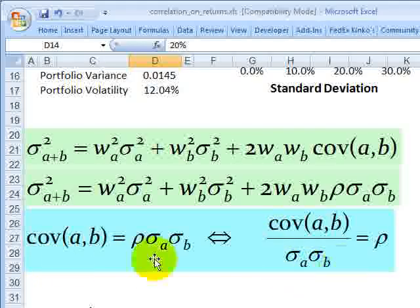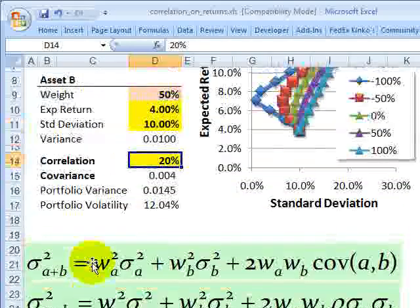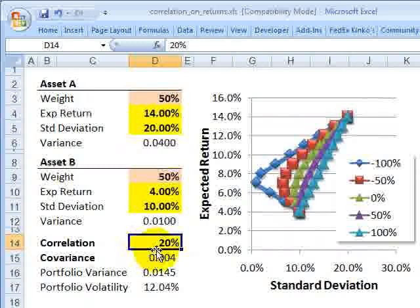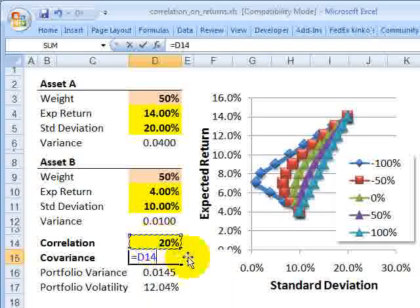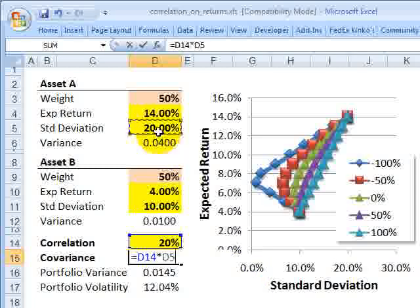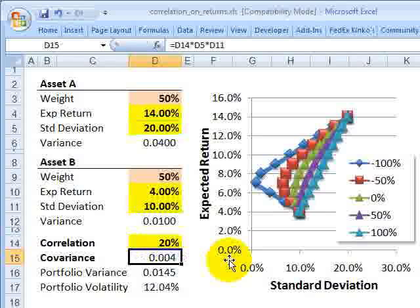So this equality and truism right here is absolutely key to us and means that we can either take the covariance or the correlation as an input. So I'm going to use the 20% correlation because it's more intuitive to us, humanly, and that means our covariance, we know, is the product of the correlation, the volatility or standard deviation of the first asset multiplied by the volatility of the second asset, in this case, 0.004.